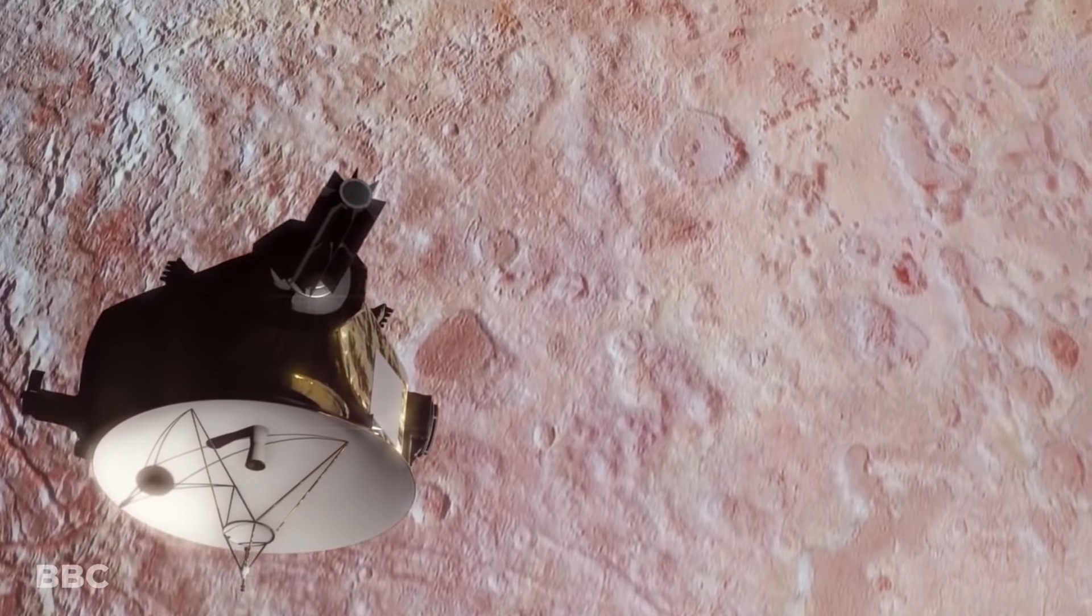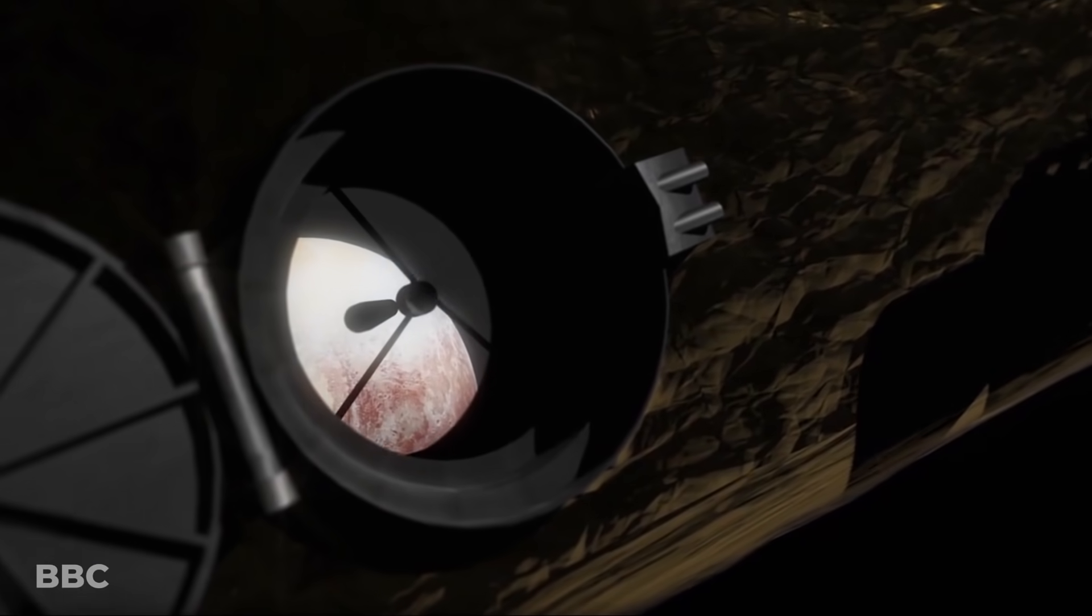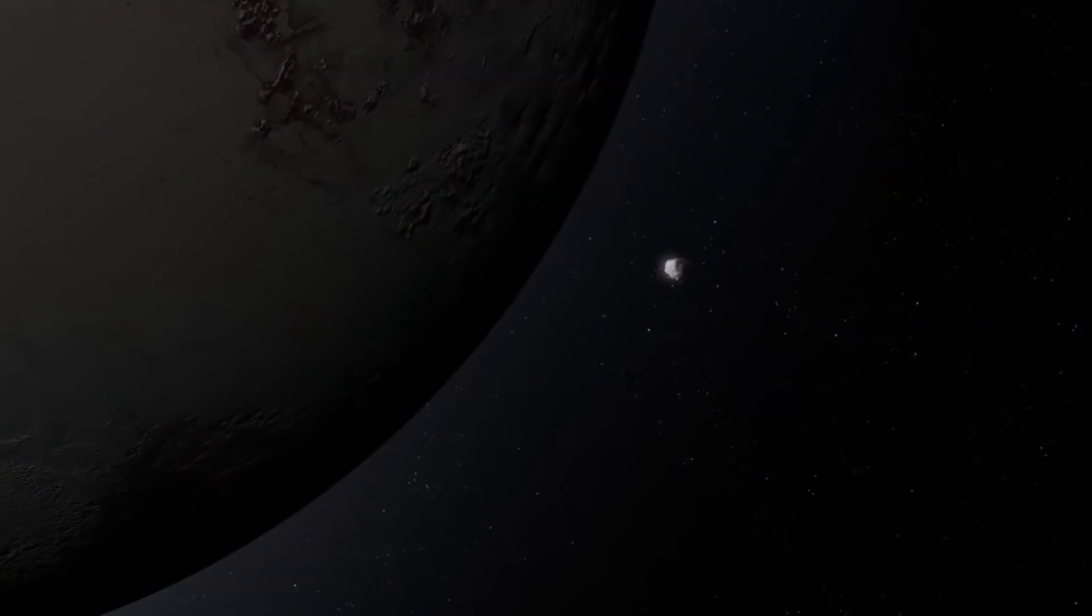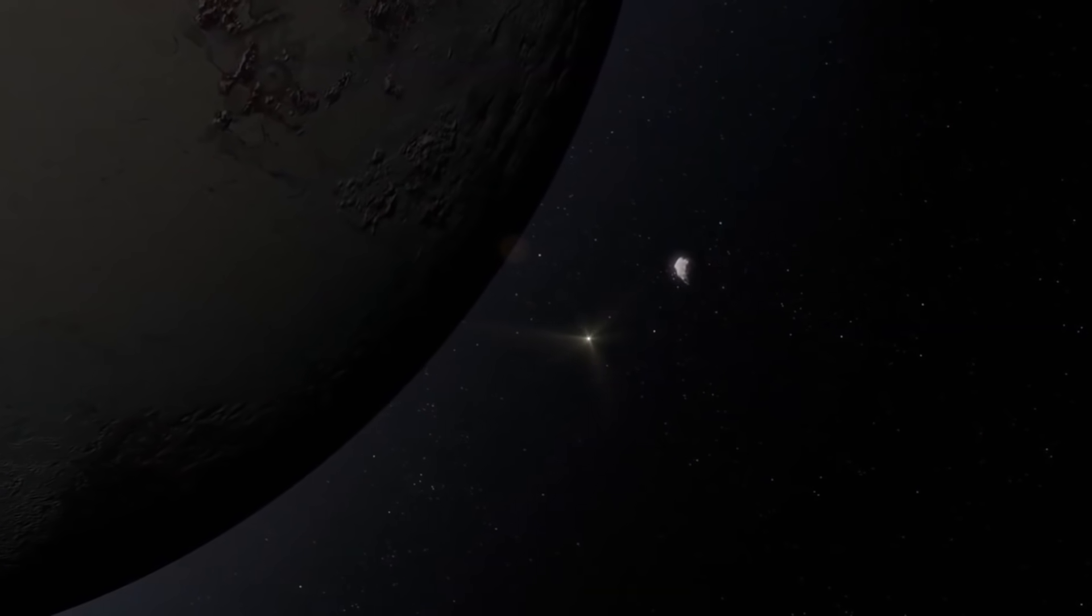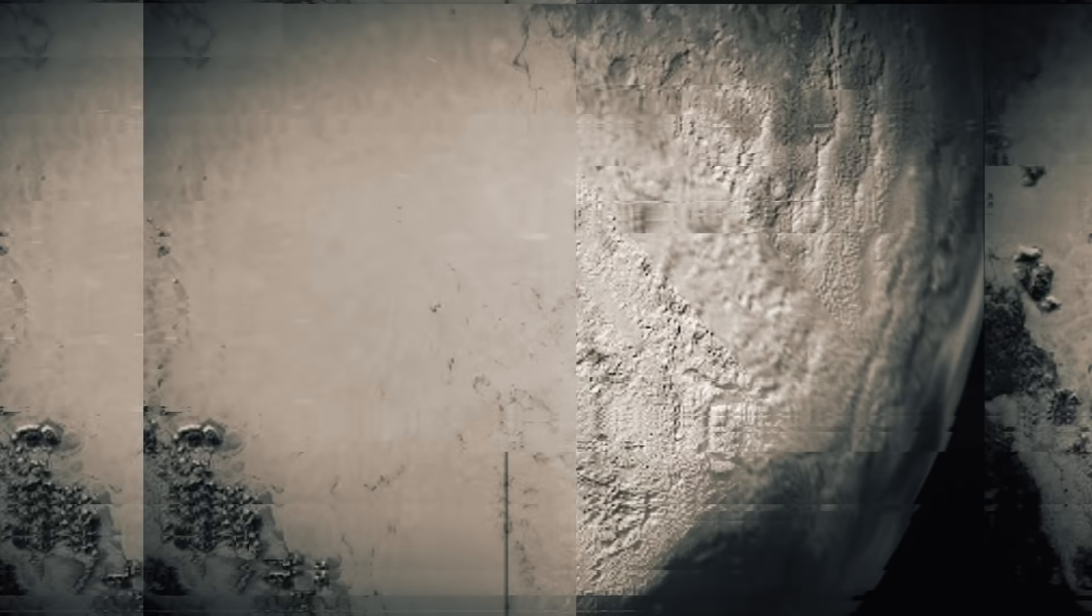In fact, the New Horizons vessel would pass within 7,800 miles of the frigid rocky surface of Pluto. That would definitely be close enough to snap quite a few promising pictures.